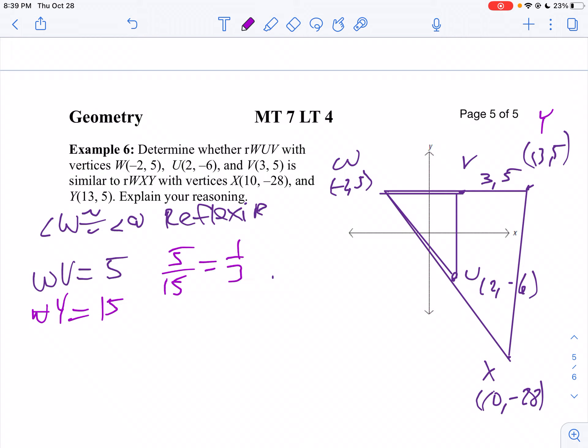Now let's look at the side around angle W. So let's look at the distance from W to U. I'm going to go from 2 to negative 2. Well, that will be 4. And then from negative 6 to positive 5, that would be 11. So then we're going to get the square root of 16 plus 121, which is the square root of 137.